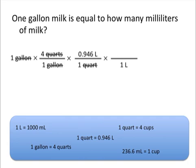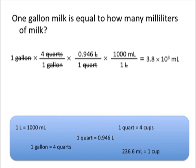We want to cancel out units of liters, so we need a conversion factor that has liters in it, and we'll write the liters on the bottom. Looking at the list of conversion factors, we see that 1 liter is equal to 1000 milliliters. Because liters is already written on the bottom, we'll write 1000 milliliters on the top, allowing us to cancel out liters. To finish the problem, we take 1 and multiply by all numerical values on top, then divide by all on the bottom. This tells us that 1 gallon of milk is equal to 3.8 times 10 to the third milliliters.